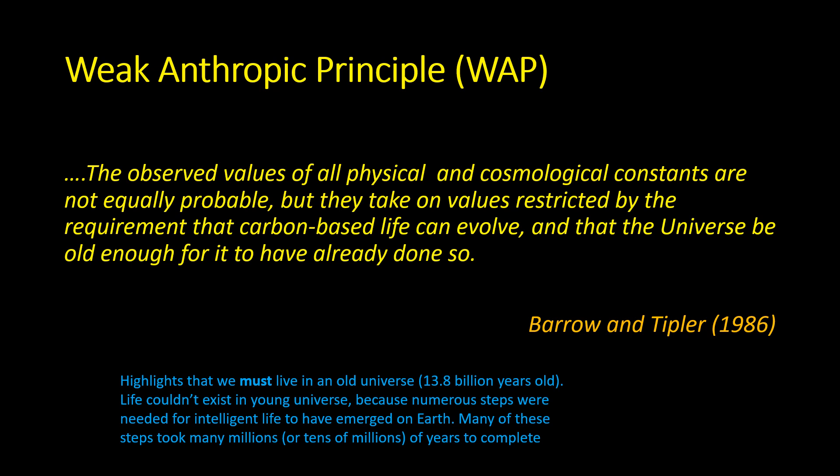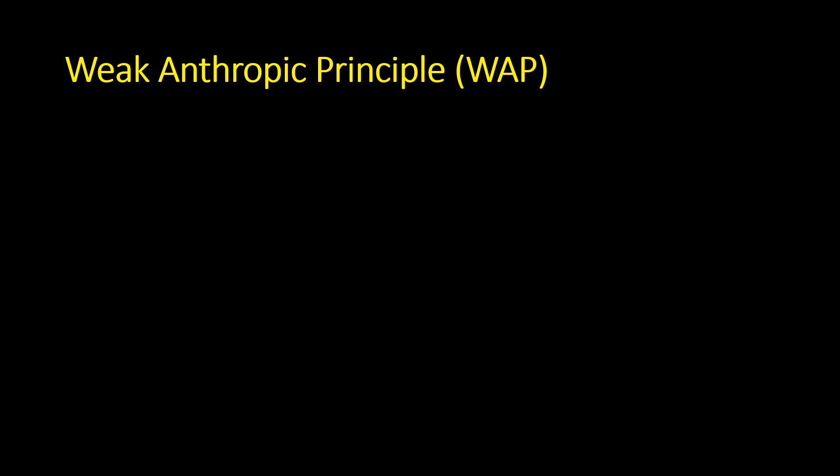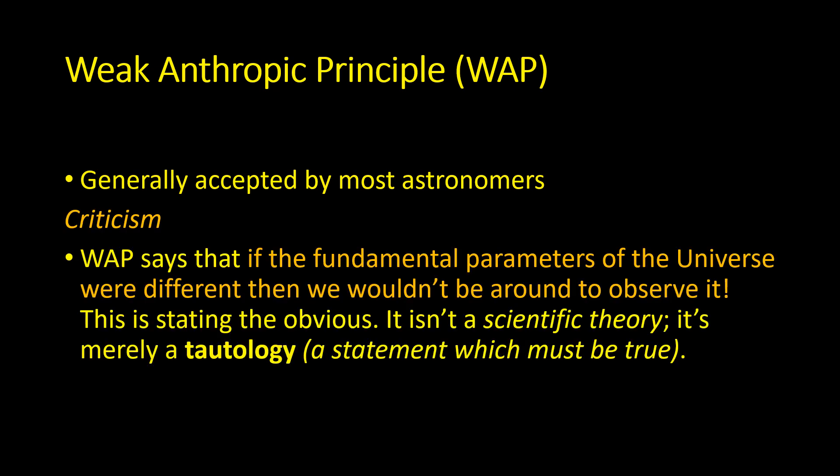One interesting fact of this definition is it highlights the fact we must live in an old universe. Life couldn't exist in a young universe, say 100 million years old, because numerous steps were needed for intelligent life to have emerged on Earth, and many of these steps took millions of years to complete. Generally speaking, the weak anthropic principle is accepted by most astronomers. In fact, one criticism of it is it's a tautology—it's not really a scientific theory, a statement that must be true.